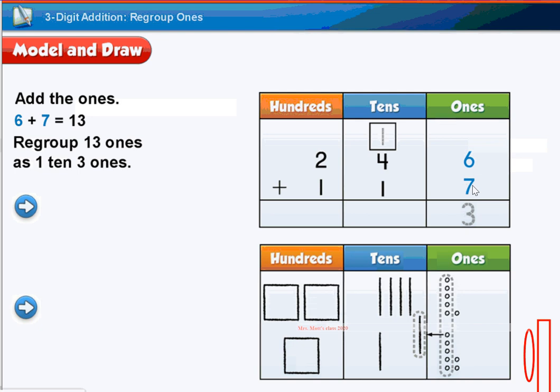And you can do whatever you need to do to add that. You can add in your heart, you can draw it out, or you can count on your fingers. As long as you get the answer, you can work it out whichever way is best for you. So 6 plus 7 is 13.